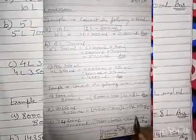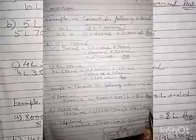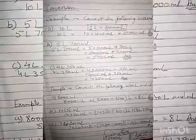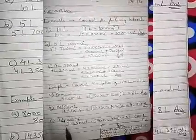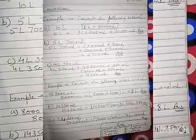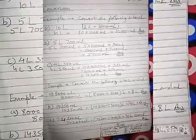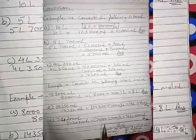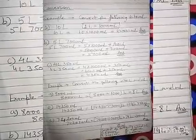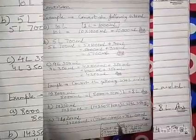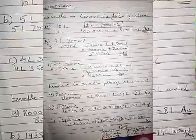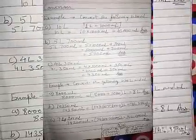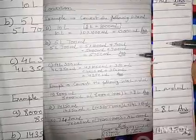Okay, now C number example: 74,200 milliliter conversion litre and milliliter. So 74,200 milliliter, 74,200 divided by 1000. Now answer 74 litre 200 milliliter. Okay, clear children, everyone write all questions in your classwork copy.